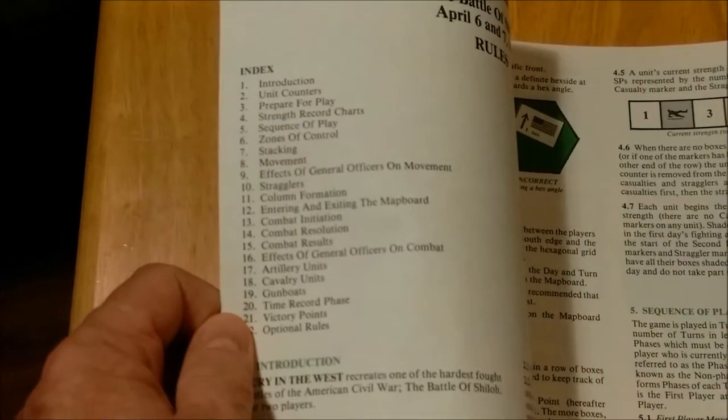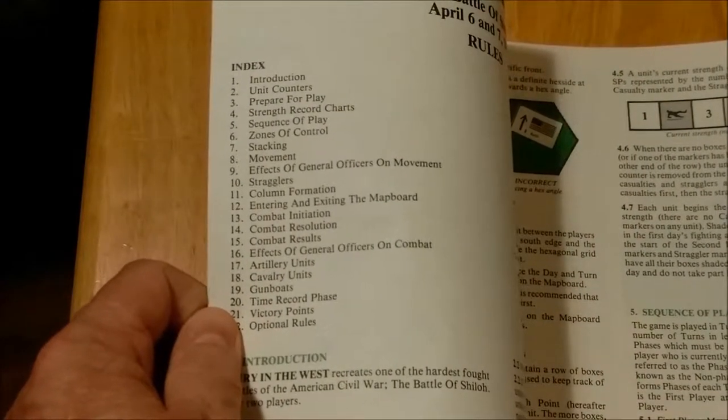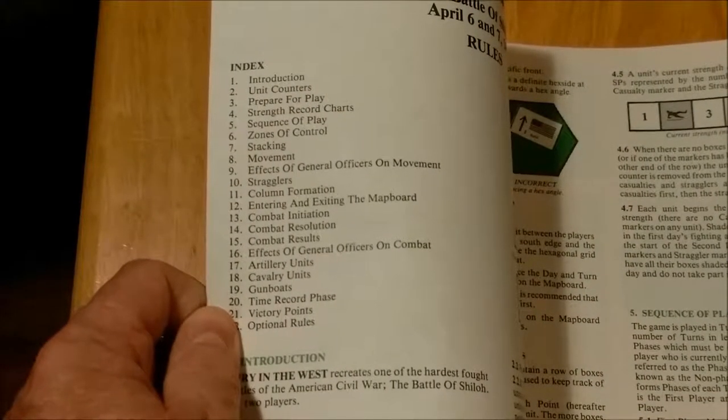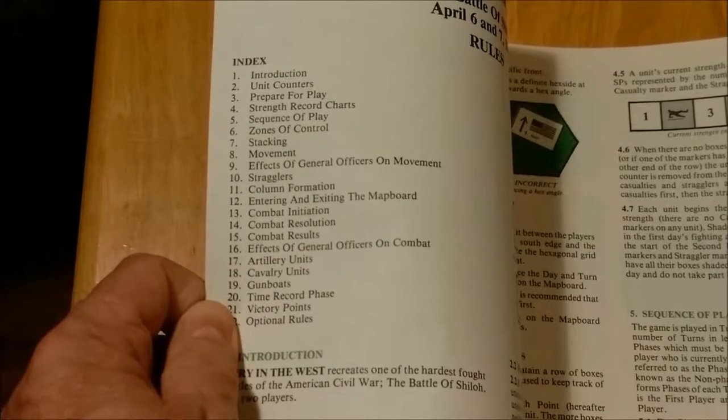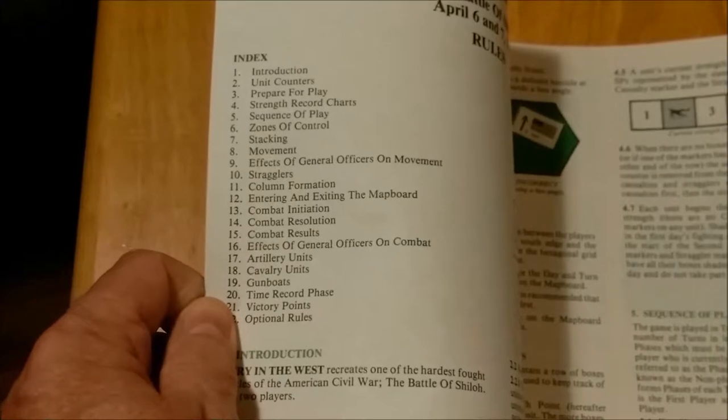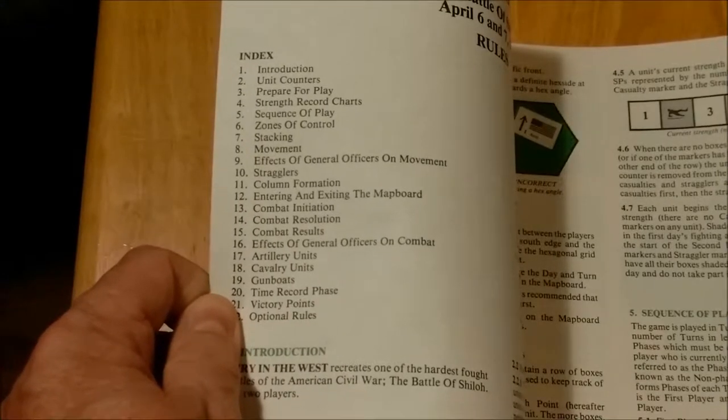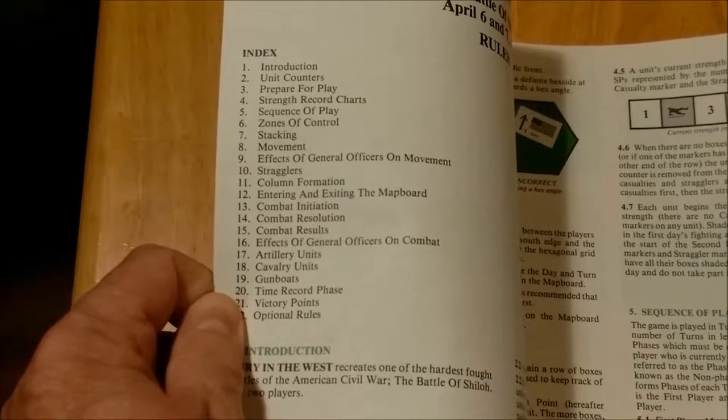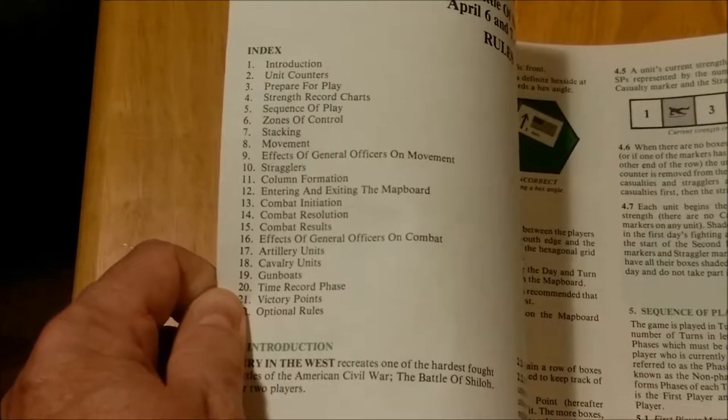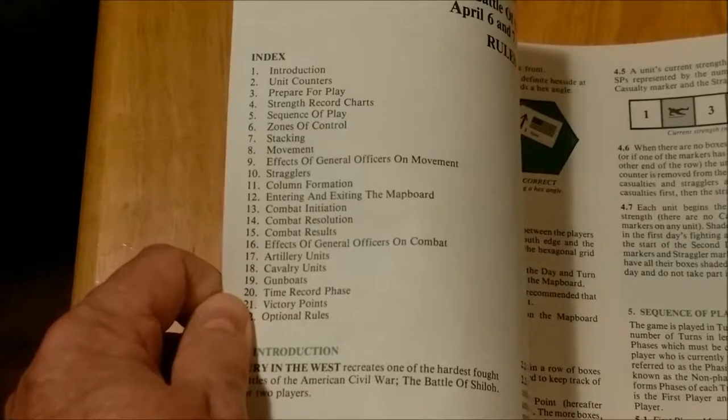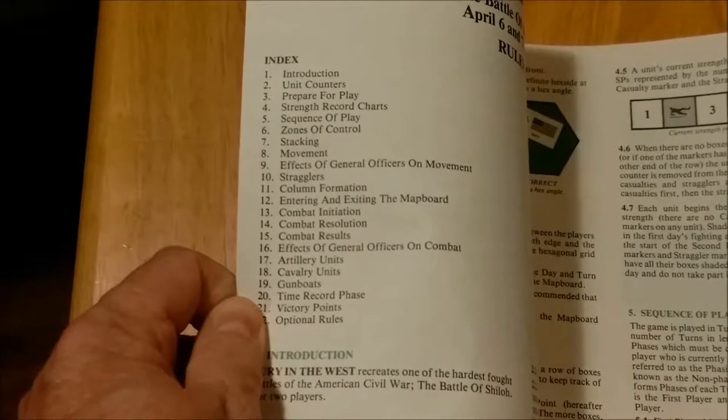It basically covers the unit counters, preparing for play, strength record charts, sequence of play, zones of control. Stacking is usually two limits. Movement is pretty much standard. Officers allow a unit to move its full movement rating. Stragglers occur if you do move and as a result of combat.